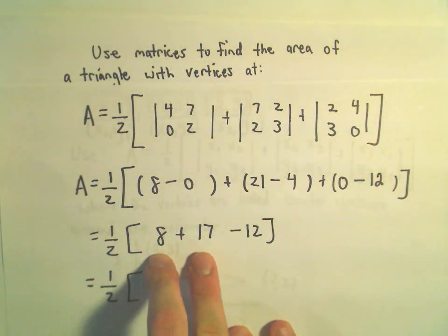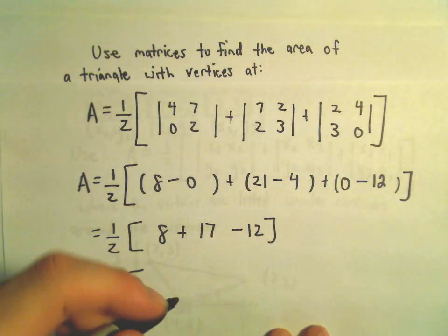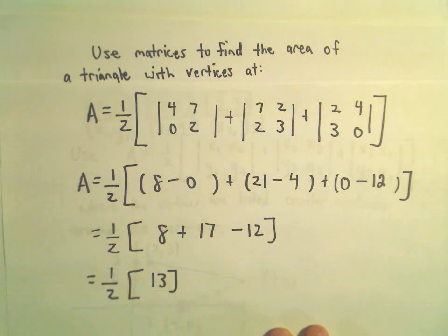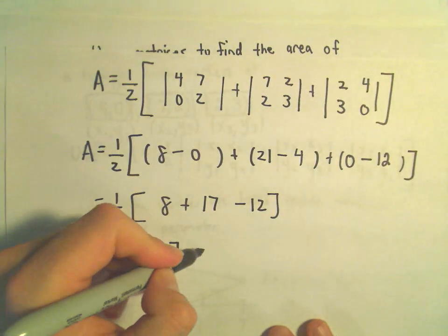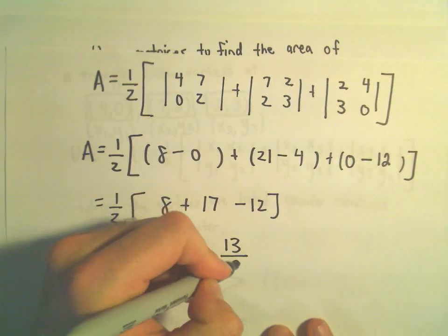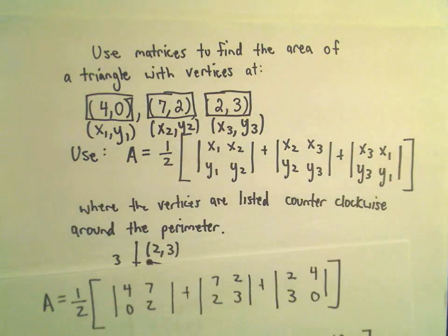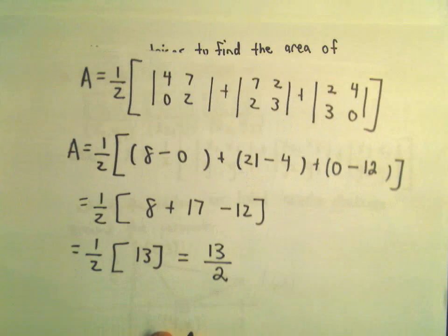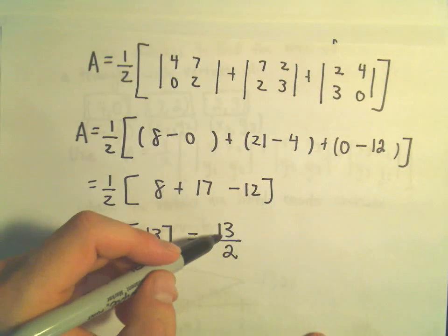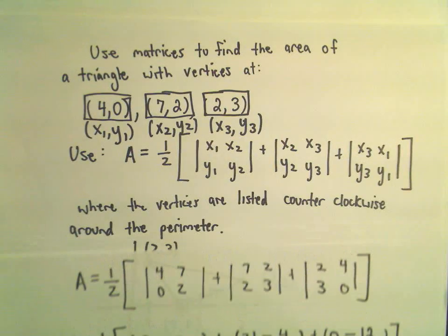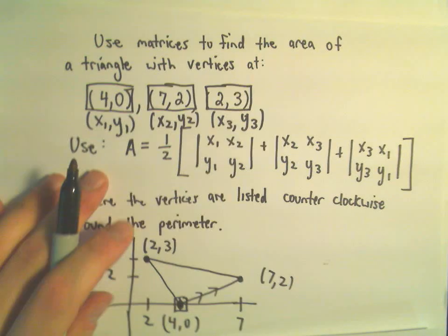Well 8 plus 17 is 25, 25 minus 12 is going to be 13. And if we multiply that by 1 half, we're simply going to get that the area of this triangle with these vertices would be 13 over 2 units squared, whatever your units are.